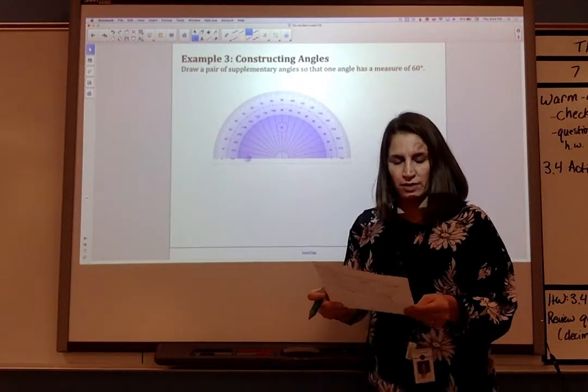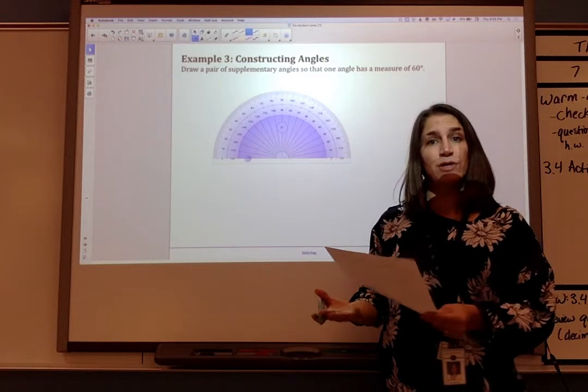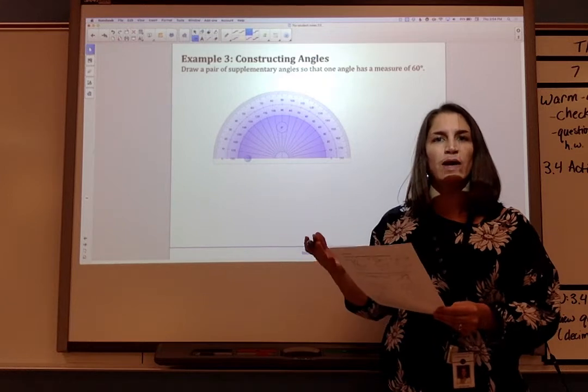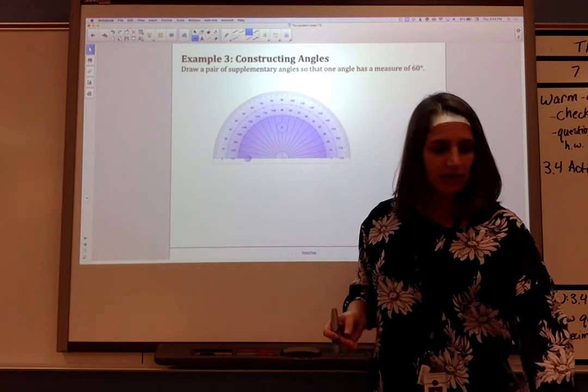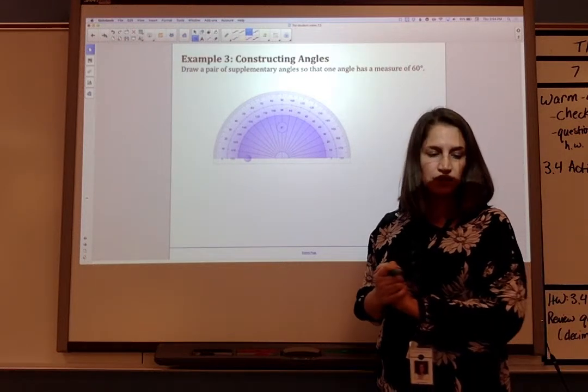For our last example, you don't have the tools to do this at home, so you're just going to take notes on how to do it, then you'll practice in class. So we're going to draw a pair of supplementary angles so that one angle has a measure of 60 degrees. Step one is to use a protractor to draw a 60-degree angle.